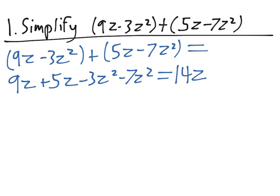And then minus 3z squared minus 7z squared is going to be equal to minus 10z squared, since 3 plus 7 is equal to 10.